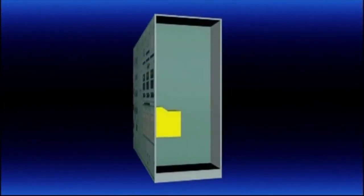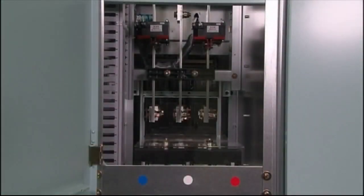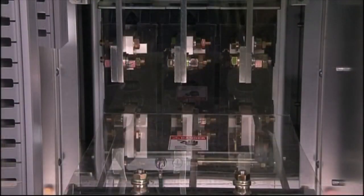Let's take a look at the inside of the switchboard and its main components. A switchboard is a box containing wiring and various pieces of equipment. This is the input section — it receives electric power from the generator. And this is the connection section, found on the back of the air circuit breaker, ACB.